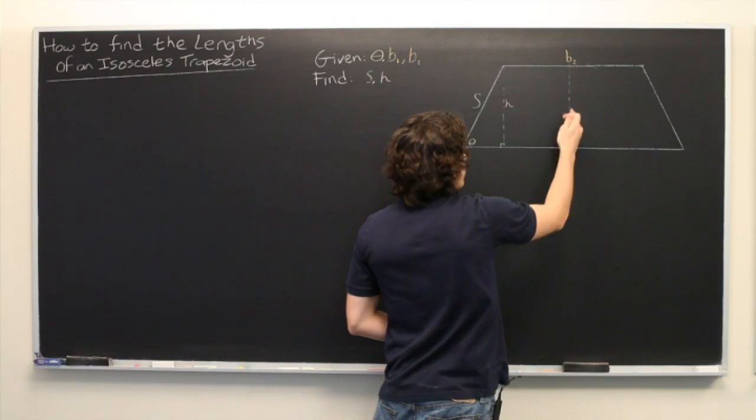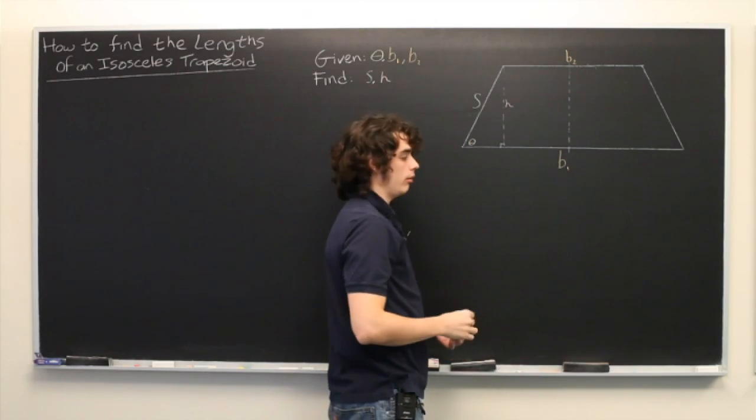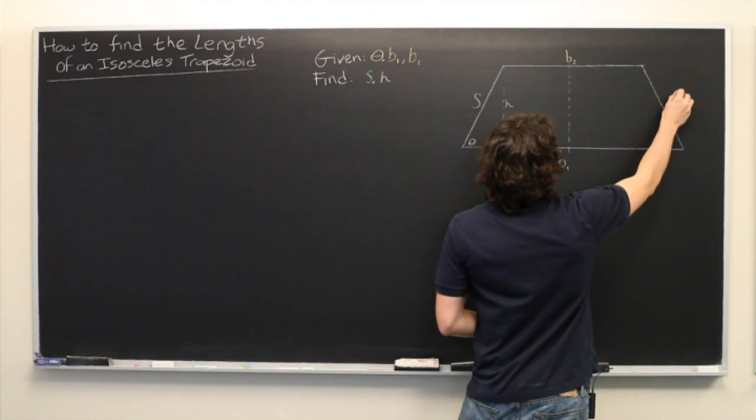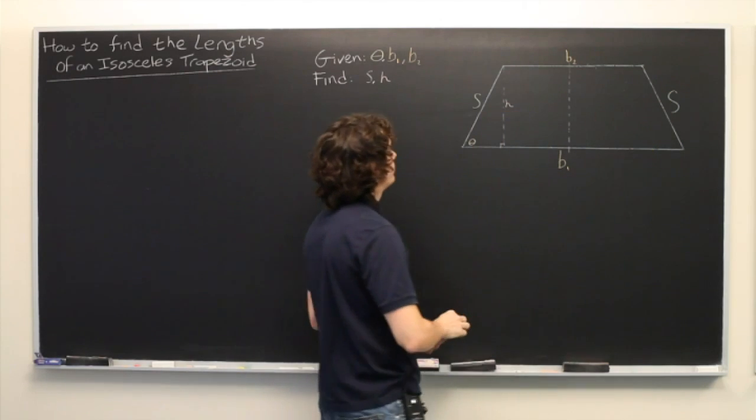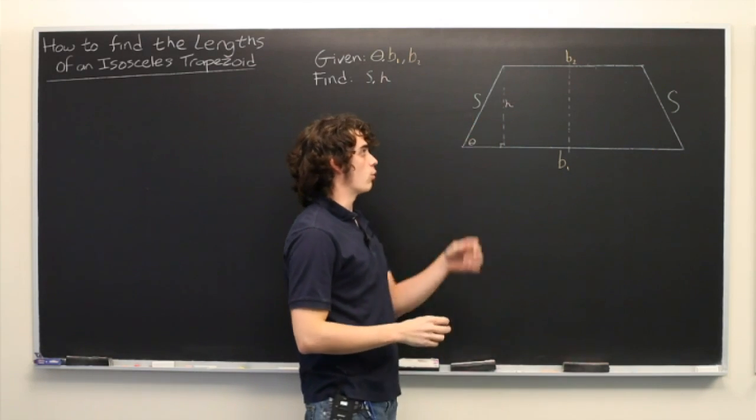Since this is an isosceles trapezoid and we have an axis of symmetry down the middle, we know that the opposite side is also S. So we're really only solving for two quantities.